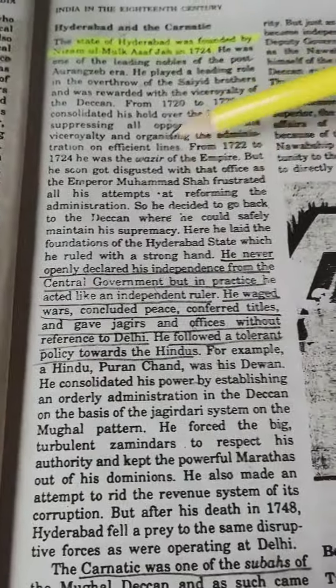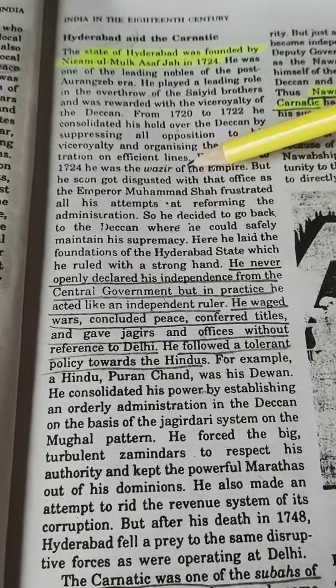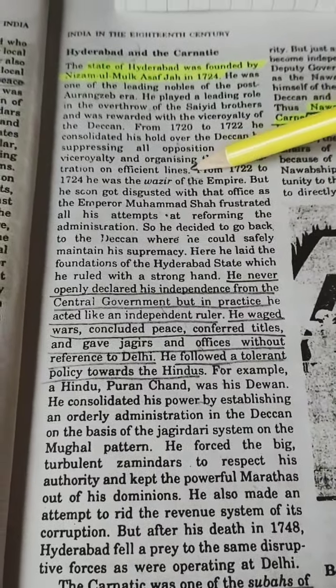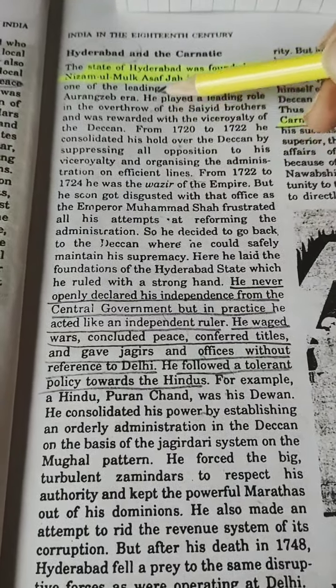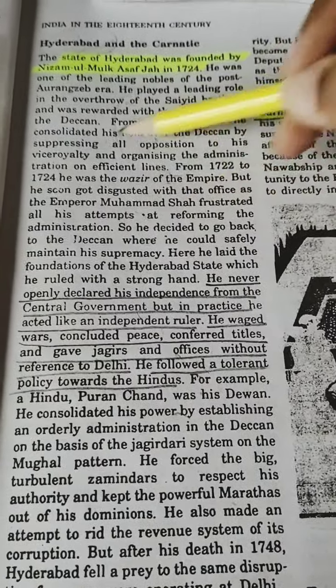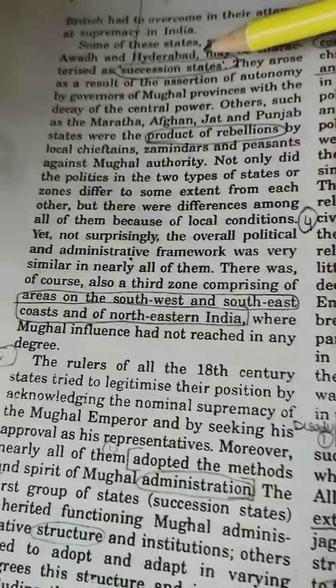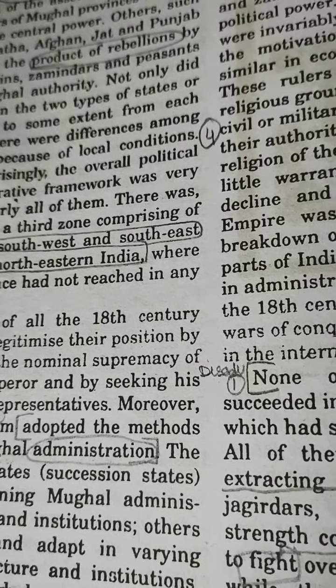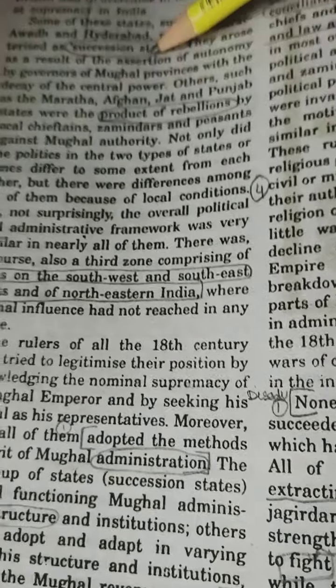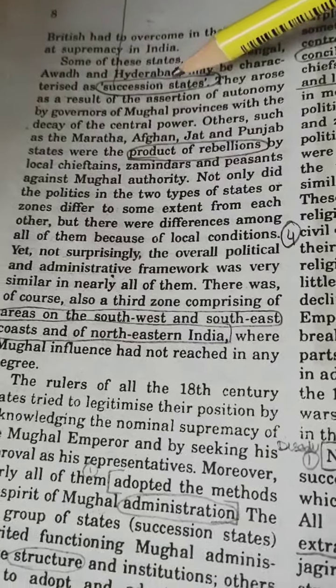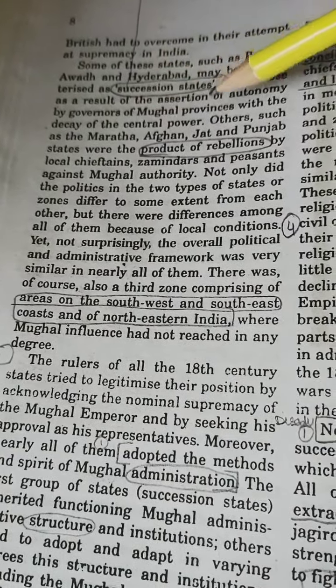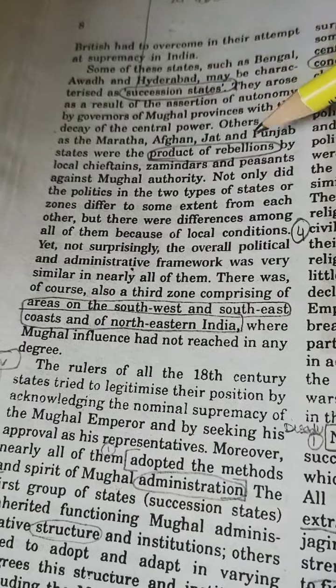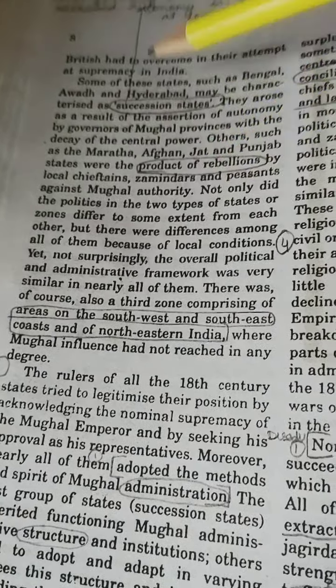What are succession states? These are states where rulers are ruling in their own way, but the name comes from the topmost central authority. The virtual exercising of autonomy in matters of execution and power is at the local level — nothing apart from that. They arose as a result of the assertion of autonomy and were a product of rebellions.